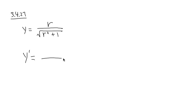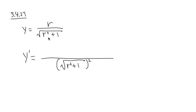So let's choose the quotient rule right away. I'm going to square my denominator first. The denominator is square root of r squared plus 1 — take that, put it in parentheses, and square that. For the quotient rule, you take the bottom, which is square root of r squared plus 1, and multiply by the derivative of the top. The derivative of r with respect to r is equal to 1. Then you minus the top function, which is r, multiplied by the derivative of the bottom.